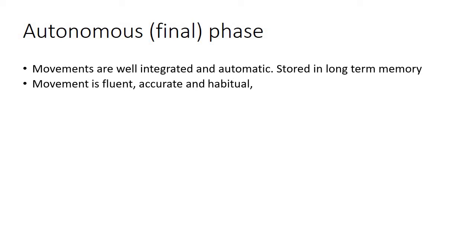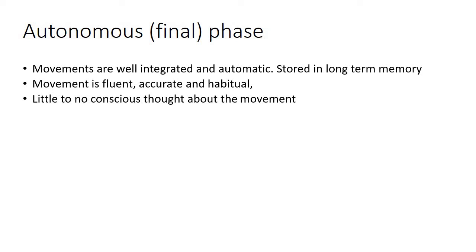Movement is fluent, accurate, and becomes a habit with little to no conscious thought. You don't need to analyze what you have to do — you automatically know. Think of walking and running: they're all skills we've learned and we're all in the autonomous phase. Think back to a very young child learning to walk — in that cognitive stage it doesn't look very fluent, there might be a few tumbles, it looks uncoordinated. By the time they're three, four, or five, they're in the autonomous phase — it looks fluent and aesthetically pleasing.